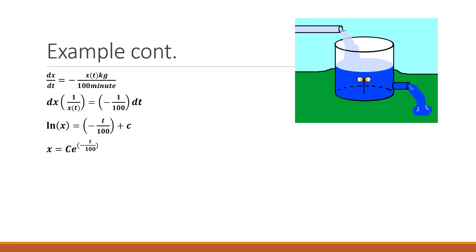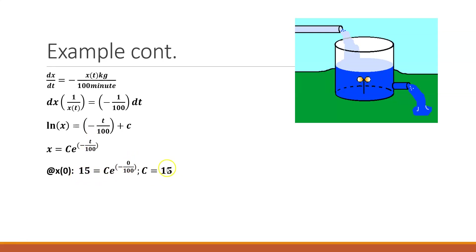We do have an initial value. At time zero, the tank had 15 kilograms of salt dissolved in 1000 liters of water. So at time zero, X(0) = 15 kilograms. Working through this, e^0 goes to 1, which means our constant of integration is 15. So we've solved for the initial value, and our concentration of salt at any given time T is X(T) = 15e^(−T/100).